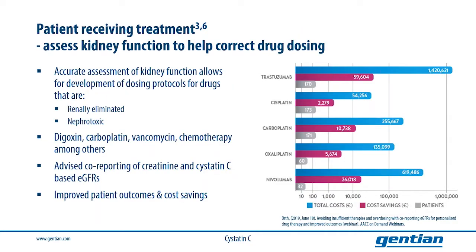The advantages of CYSTATIN-C as a marker for kidney function also make it suitable for use in situations that are outside the purview of most nephrologists and primary care physicians. For instance, one hospital in Germany noted annualized savings in excess of 100,000 euros by optimizing chemotherapeutic drug doses through the co-reporting of creatinine and CYSTATIN-C-based GFRs.